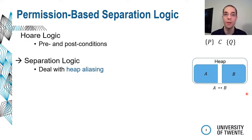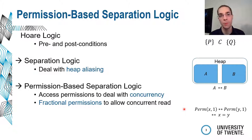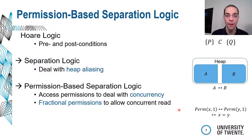Another challenge comes from concurrency, and permission-based separation logic is a way to deal with that. Whenever you want to use a heap variable, you need to have permission to access it. For example, to compare X and Y, we need permission for X and permission for Y. These permissions are fractional — they have a value between 0 and 1. A value of 1 means write access, and anything strictly between 0 and 1 means read-only access. All permissions for one specific heap location summed together must not exceed 1, so we can have at most one write access but multiple concurrent read accesses.